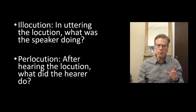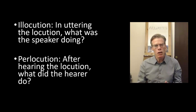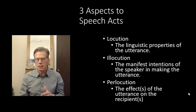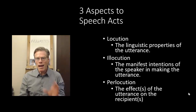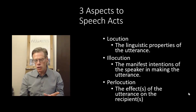The last two are sometimes hard to differentiate. So another way of thinking of this is: in uttering the locution, what was the speaker doing? Or, if we want to look at perlocution, after hearing the locution, what did the hearer do? So again, there are these three aspects to any speech act: the locution, the linguistic properties of the utterance; the illocution, the manifest intentions of the speaker in making the utterance — and I say manifest because these have to be on the surface, there can't be hidden intentions, those don't lead to illocutions; and then the perlocution, which is the effect of the utterance on the recipients.